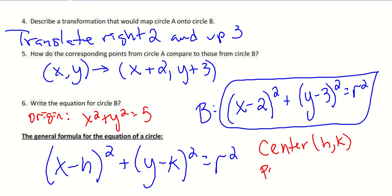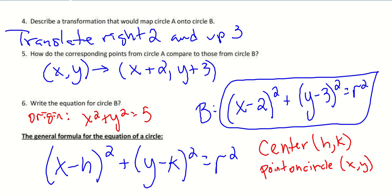Any point on the circle is going to represent any point x, y in our equation. This x and this y is representing some generic point on the circle, so when we write the equation of the circle we don't plug anything in for that. The radius in the equation is the square root of r squared — so whatever this number is, square-rooted, is our radius.